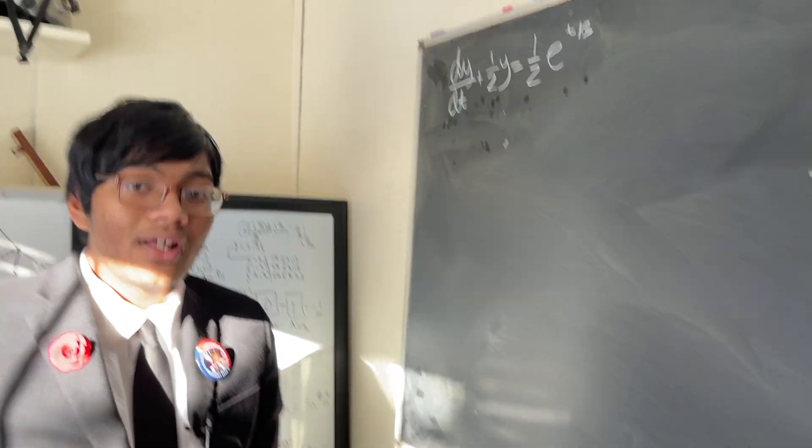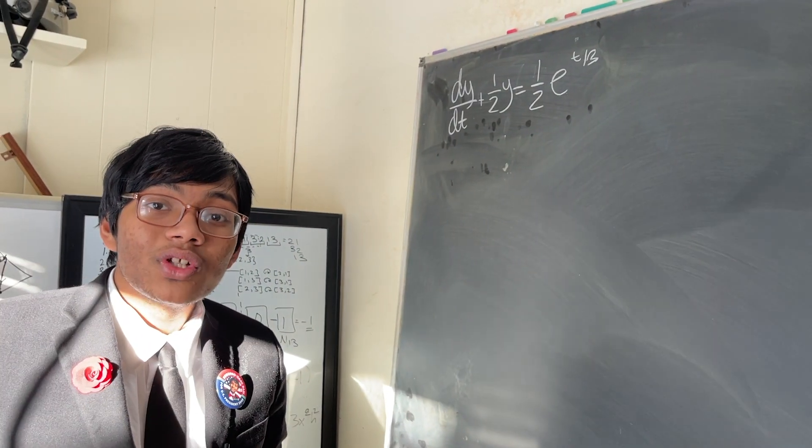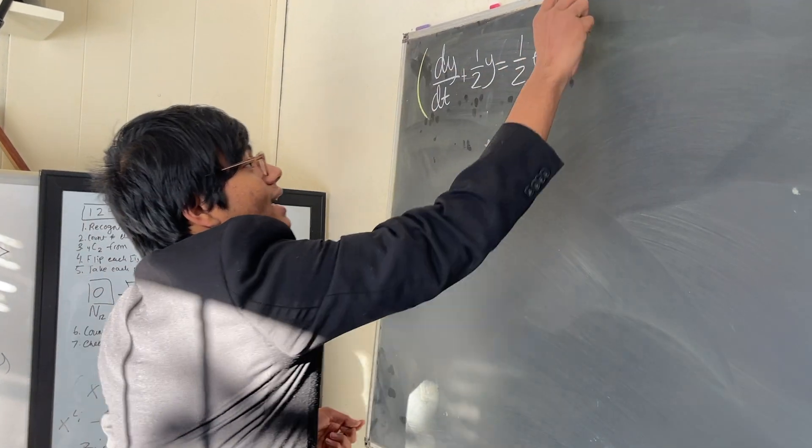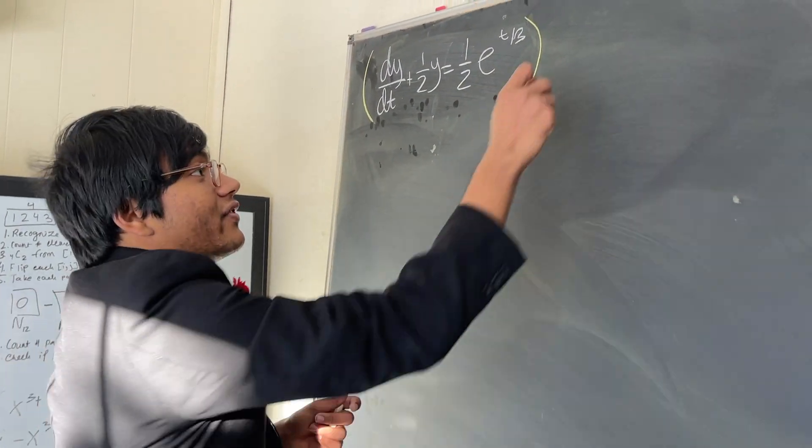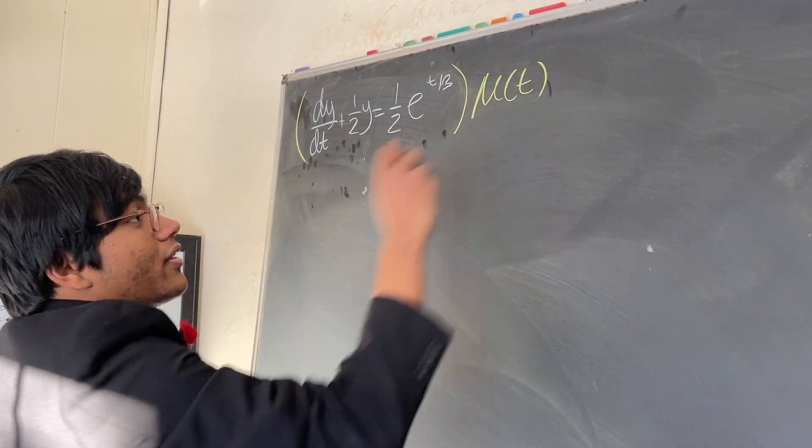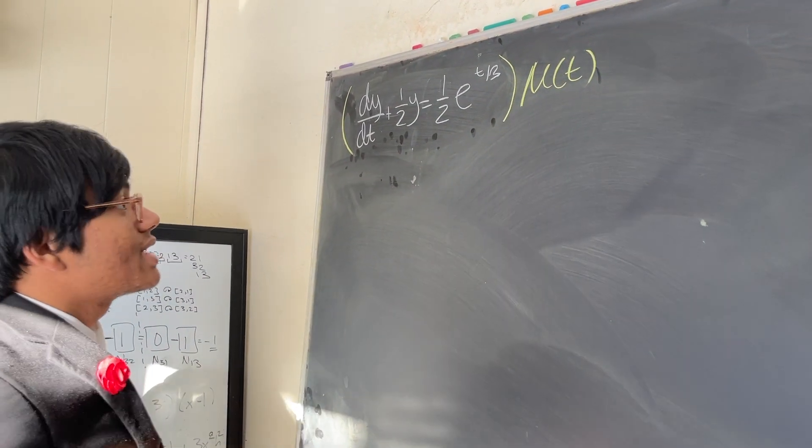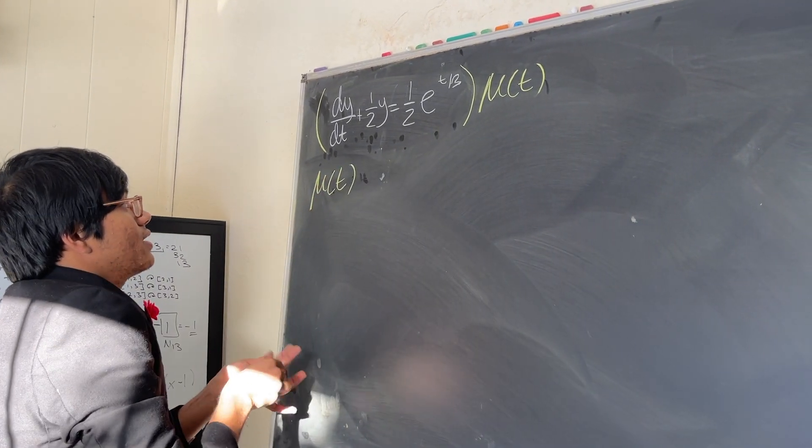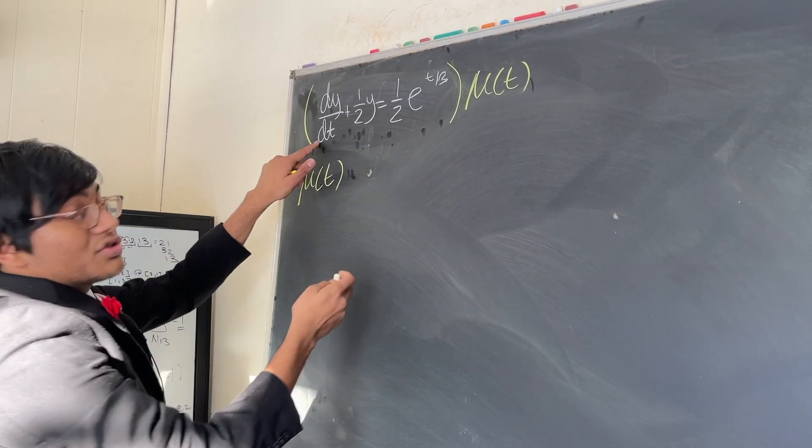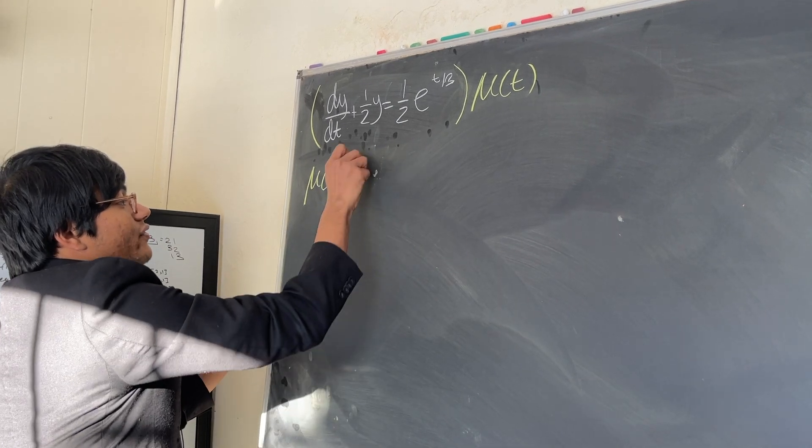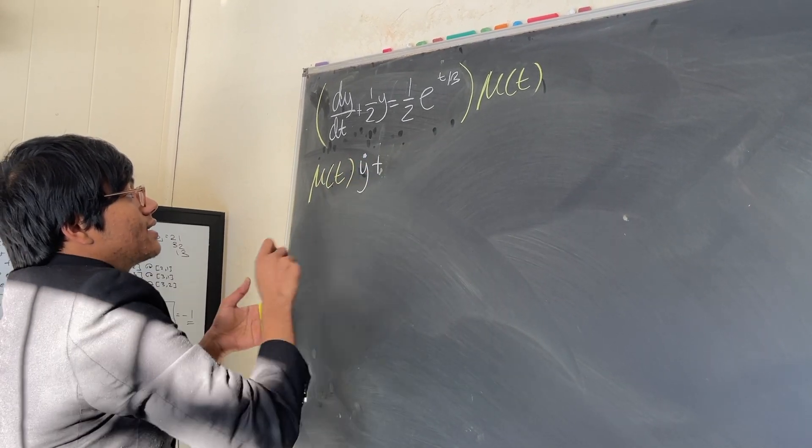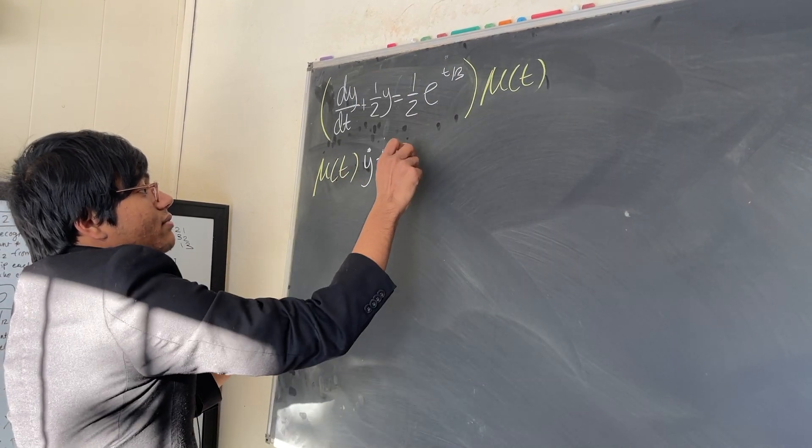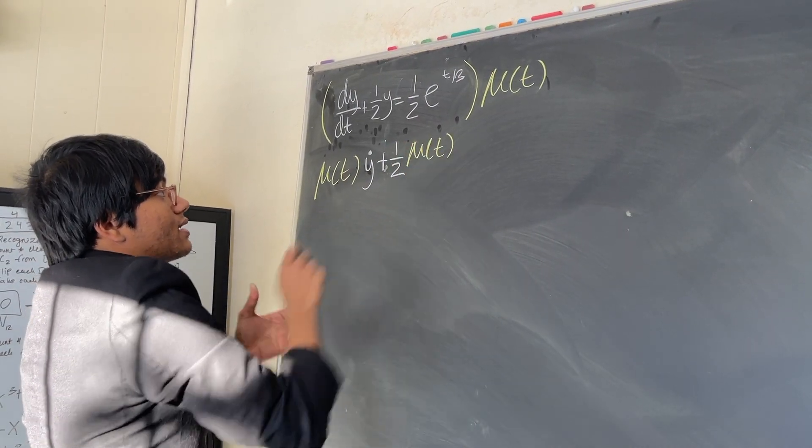The trick is you have to multiply it by a certain factor, and that factor is not a number, it's going to be a function. Let's call it mu of t. Now if I multiply both sides by mu of t and just distribute, what am I left with? I'm left with mu of t, let's write dy/dt in the standard form as y dot, plus half I distribute this to this term and I have mu of t times y.